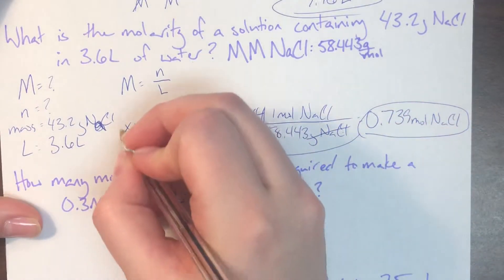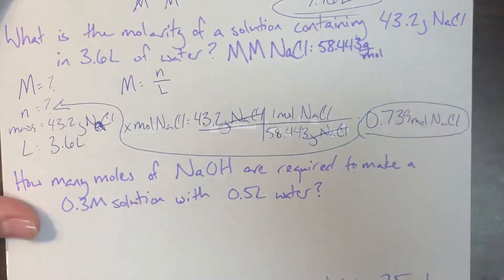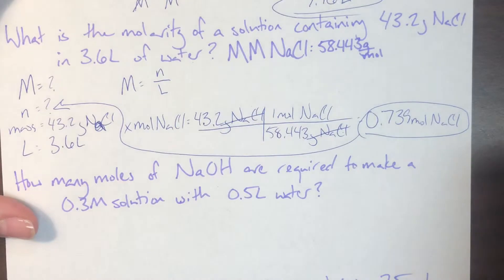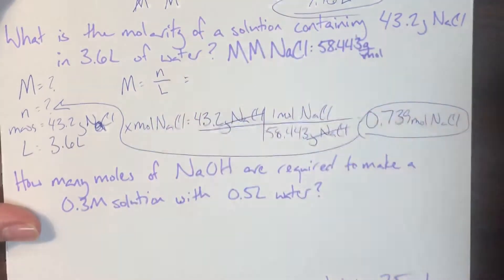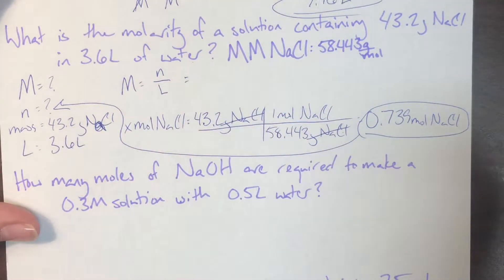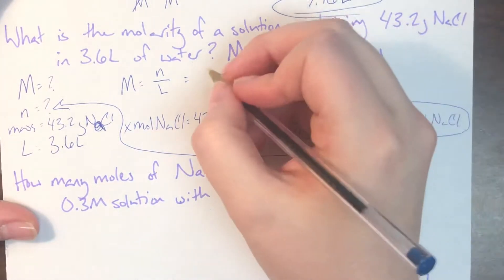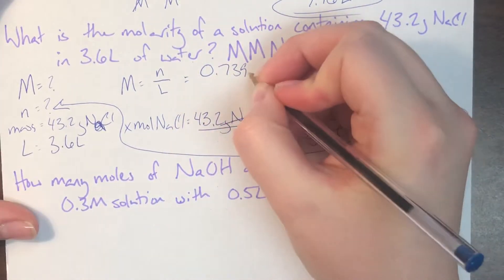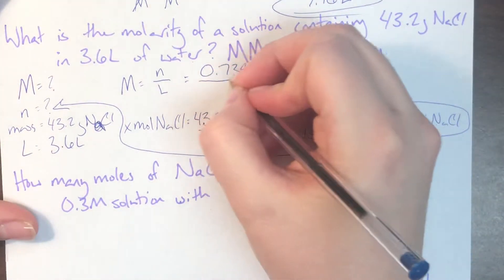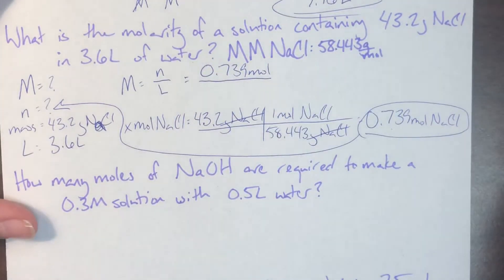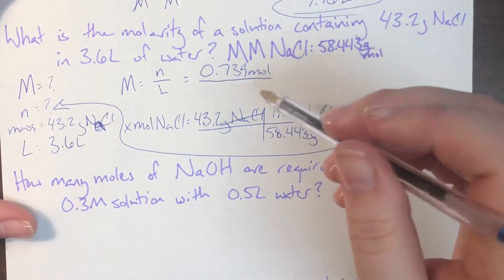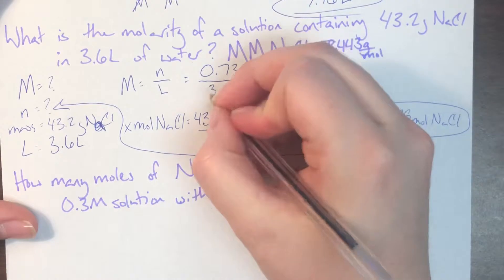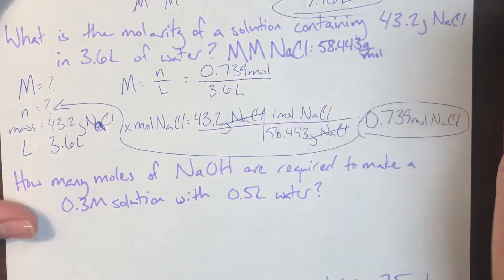And I'll go ahead and bring that over there, and I'll let myself know that that is now my N. And I can go ahead and plug everything in since this is already isolated. So my N is that new number that we just found, so 0.739 moles. And I will be dividing it by the liters that was provided, so that was 3.6 liters.